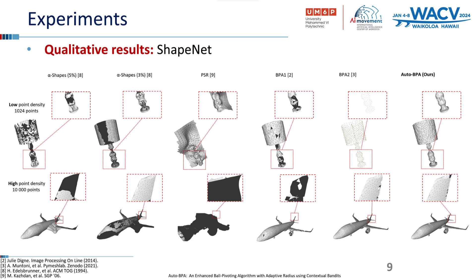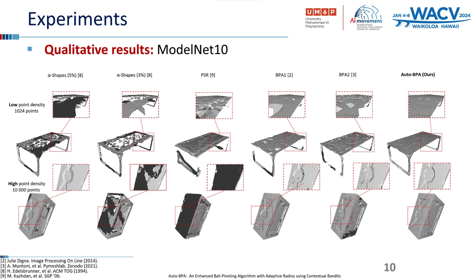Aligned with the quantitative results, the qualitative findings present augmented quality in the reconstructed meshes using our proposed approach compared to other baselines, notably alpha shapes and Poisson surface reconstruction. These baselines encounter issues with surface normals, in contrast to our reconstructed samples which present favorable normal orientations. Additionally, we observed that reconstructed objects with the other baselines often feature significant holes, whereas our approach infrequently exhibits small holes.